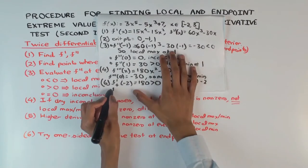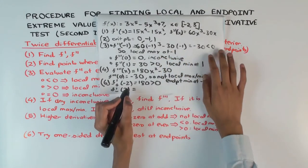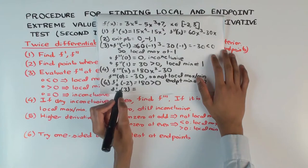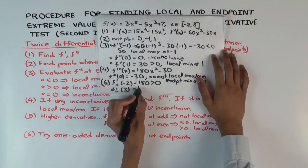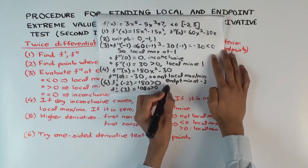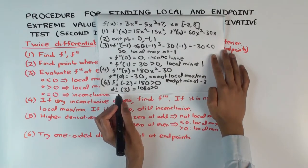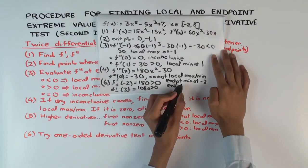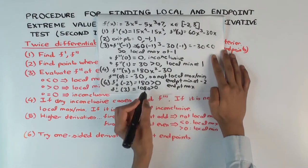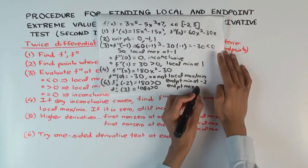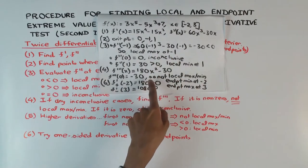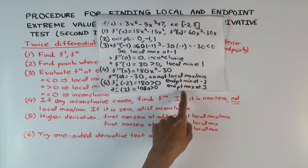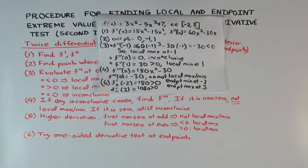At x = 3, the left-hand derivative is 15(3⁴) minus 15(3²) = 1080, which is positive. The function is increasing on the immediate left of 3, so we get an endpoint maximum at x = 3. Overall: endpoint min at -2, local max at -1, neither at 0, local min at 1, endpoint max at 3.